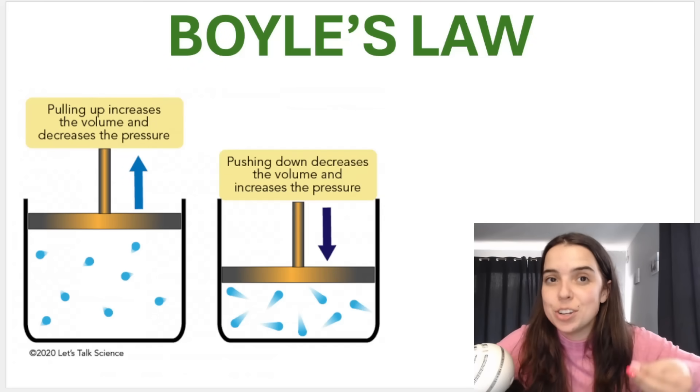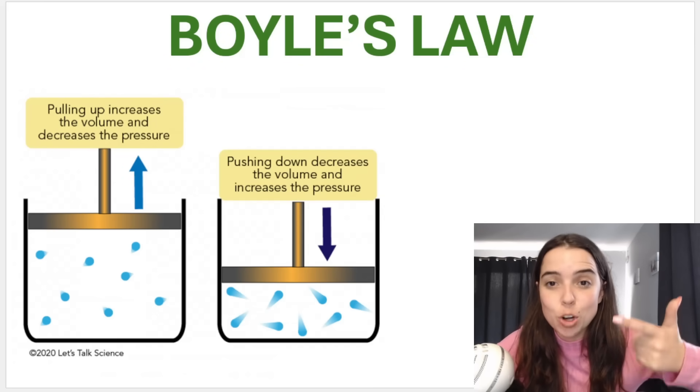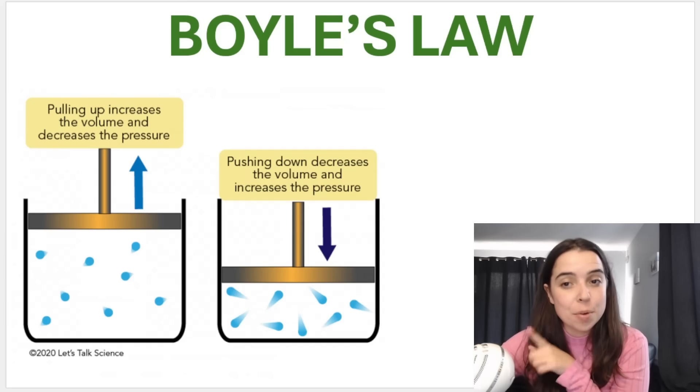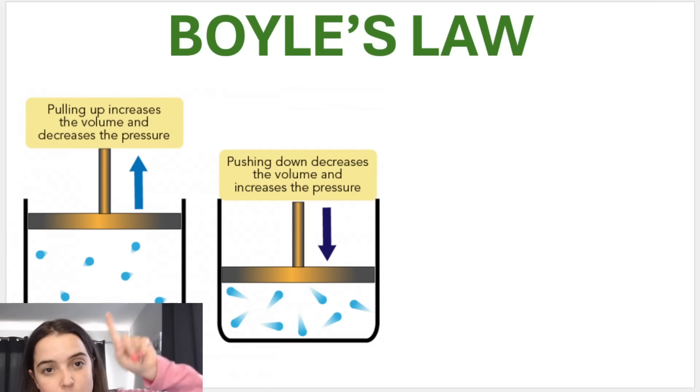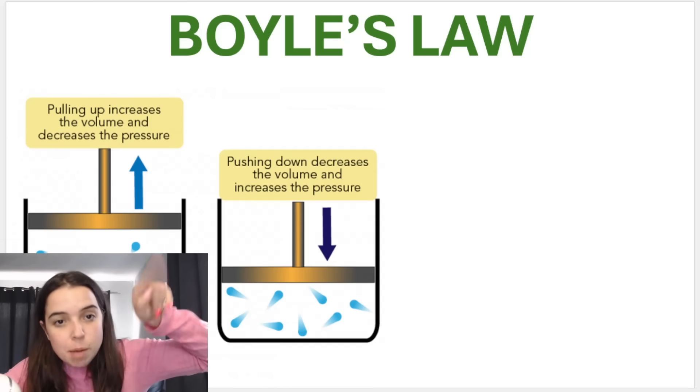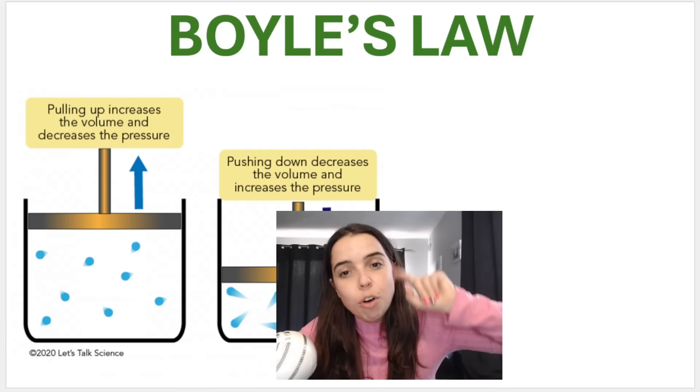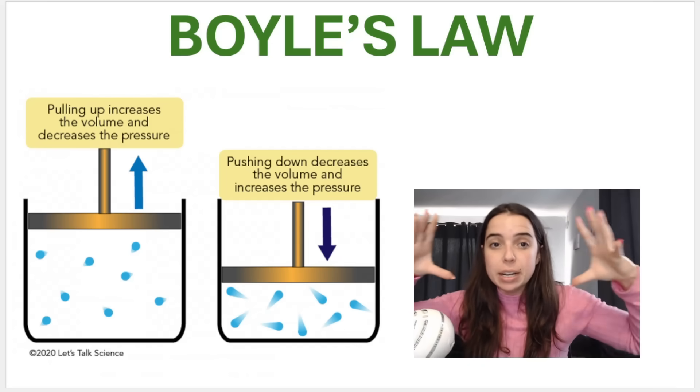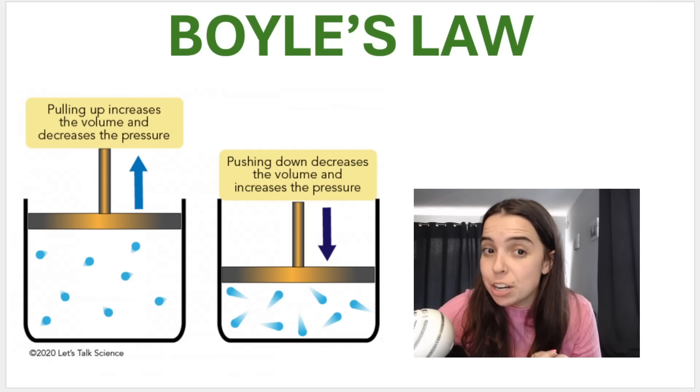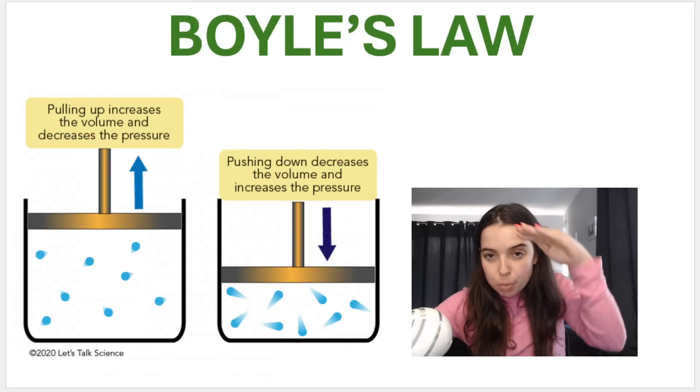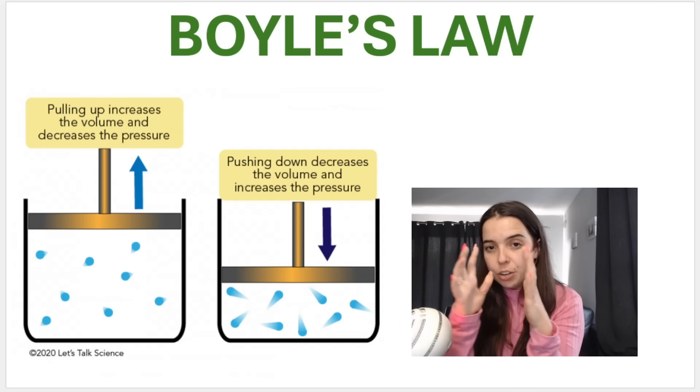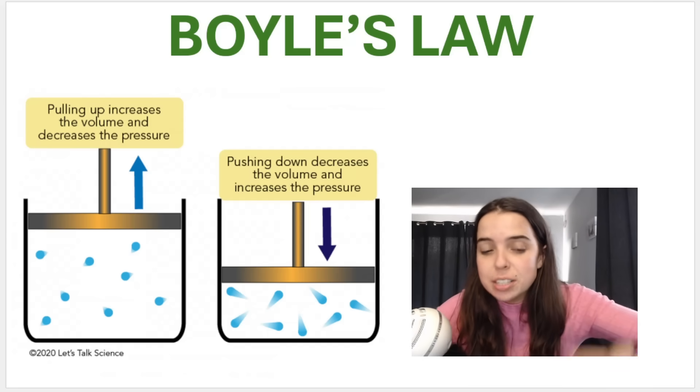Boyle's law explains the relationship between pressure and volume for gas in a container. If you take a look at this diagram, pulling this piston up in the cylinder or syringe increases the volume, which decreases the pressure. If I do the opposite and push the syringe down, I'm decreasing the volume, which increases the pressure.